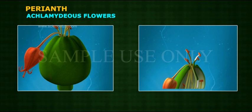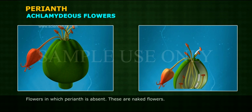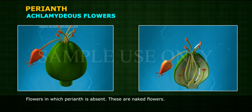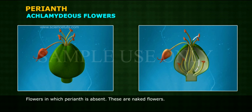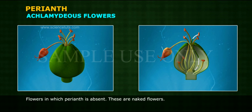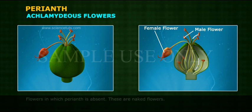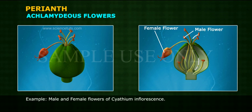Achlamydeous flowers: Flowers in which Perianth is absent. These are naked flowers. Example: male and female flowers of Cyathium inflorescence.